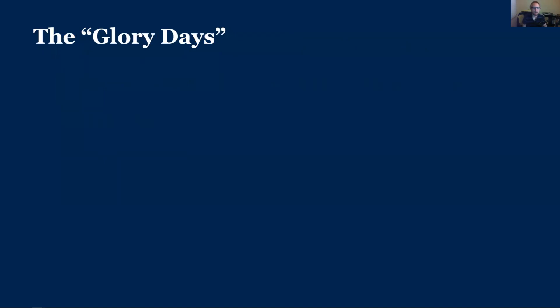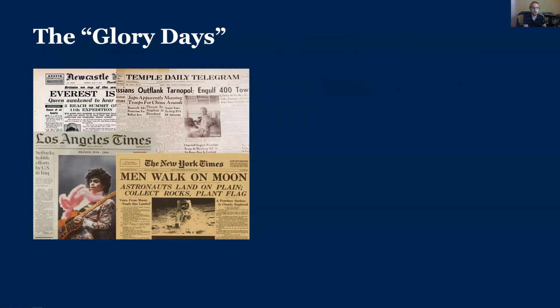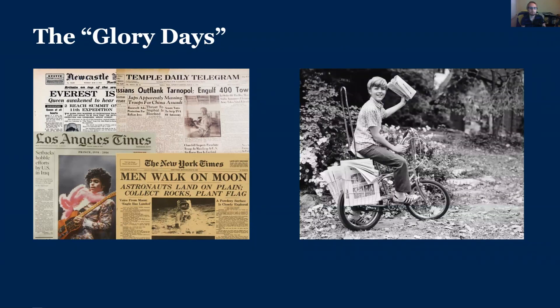A long time ago, in an ancient America — okay, maybe this wasn't that long ago — it was once true that people subscribed to name brand newspapers, such as the Los Angeles Times or the New York Times, and had them physically delivered to their home. Many still think of this era of the information ecosystem as sort of the glory days, the days where we didn't have any of the problems that we experience today.